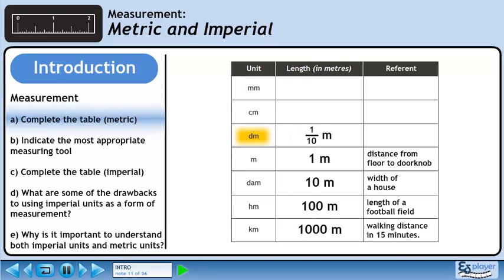Now we'll look at units smaller than a meter. The decimeter is 1 tenth of a meter. A decimeter is roughly the length of a crayon.